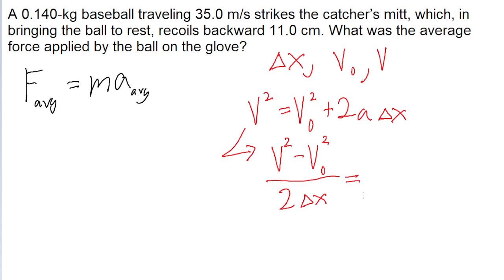We just need to plug in the variables that we have in the problem. So the initial speed, or the final speed is zero, minus the squared initial speed of 35 meters per second. So we put this into a calculator, and we find an average acceleration of about negative 5,568 meters per second squared.